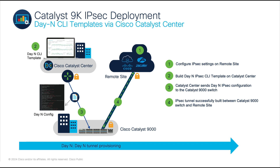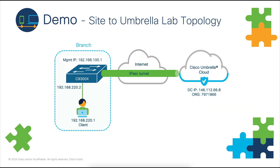This action will push the IPsec settings to the switch, facilitating the IKE phase 1 and phase 2 negotiation to finally establish the IPsec tunnel to the remote side. Before we go ahead with the demo, let's first go over the setup's topology. Here we have a Catalyst 9300X switch, highlighted in blue, which is connected to a client machine. The intent here is to build an IPsec tunnel from the switch to Cisco Umbrella to provide this client with internet connectivity.